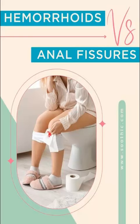Although both conditions can cause pain and discomfort in the anal area, there are some key differences between hemorrhoids and anal fissures. Hemorrhoids typically cause bleeding, while anal fissures do not. Hemorrhoids are also typically located either inside or outside the anus, while anal fissures are located in the lining of the anal canal.